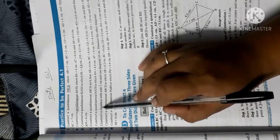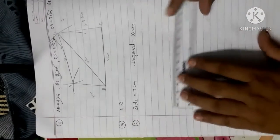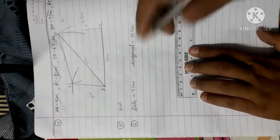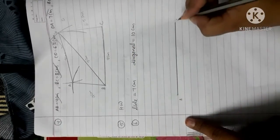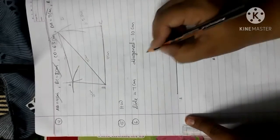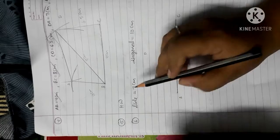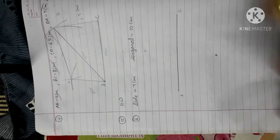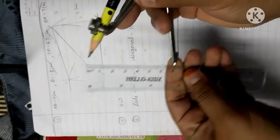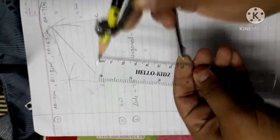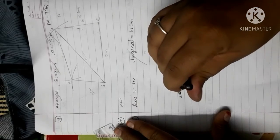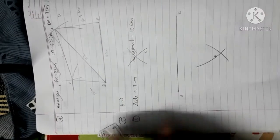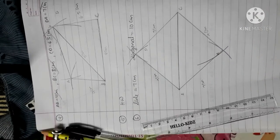For the rhombus, as we know all sides are equal. Draw a 10 cm line and write down here A and C, because B will come down and D will come up. Now we know that all sides of a rhombus are equal, so we have 7 cm. Open the compass to 7 cm, cut it from both sides, then now join the lines. Now it is completed.